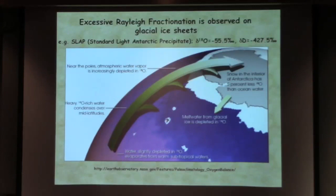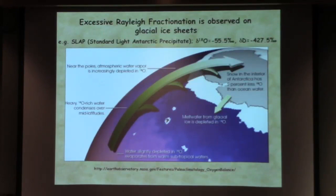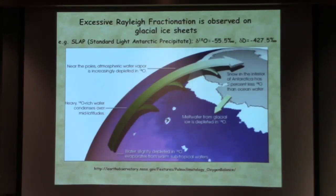We start to see δ¹⁸O values — SLAP is minus 55 per mil, Standard Light Antarctic Precipitate. You can see how light the hydrogen isotope values are. This has a fundamental effect on ocean geochemistry — not because of a 5% change per se, but because we can literally pull perhaps 3% of the ocean water out and dump it up on continents during glacial times.